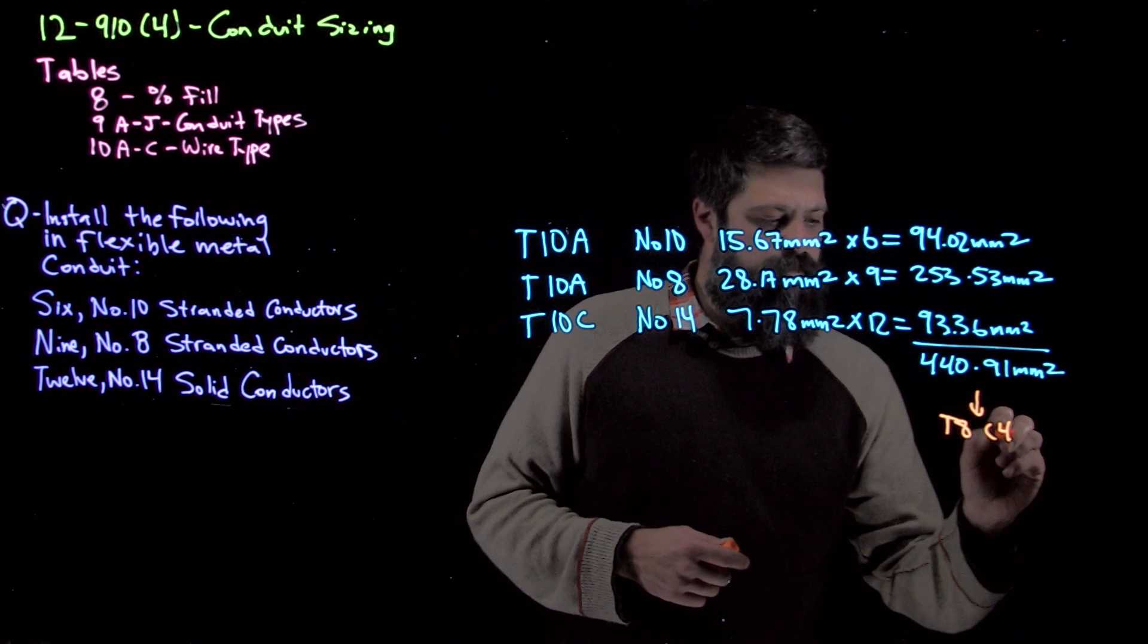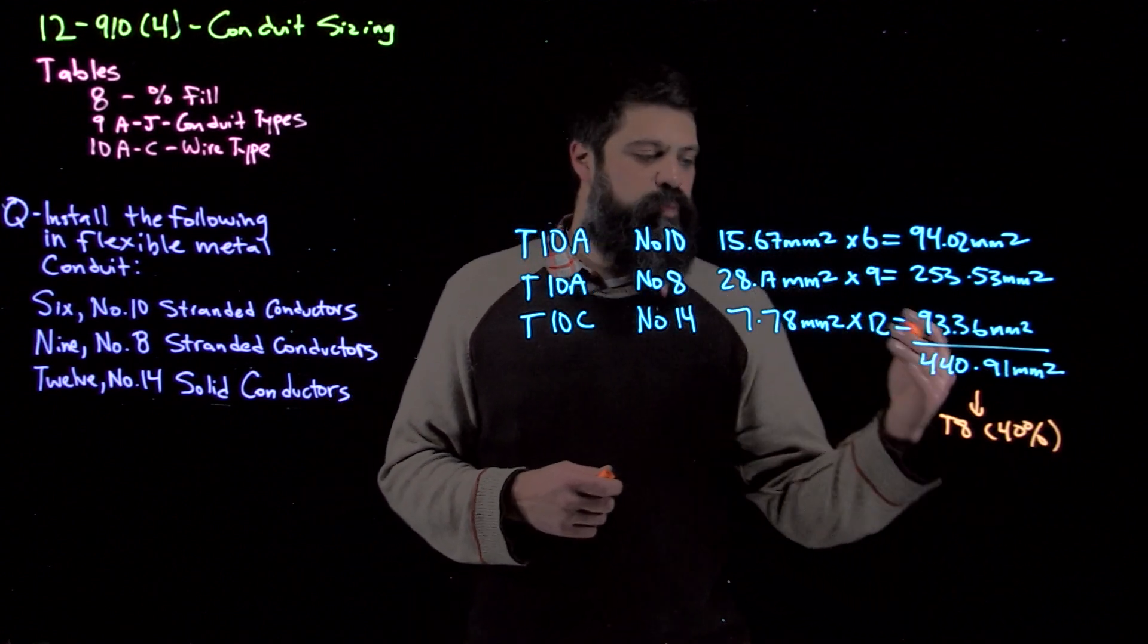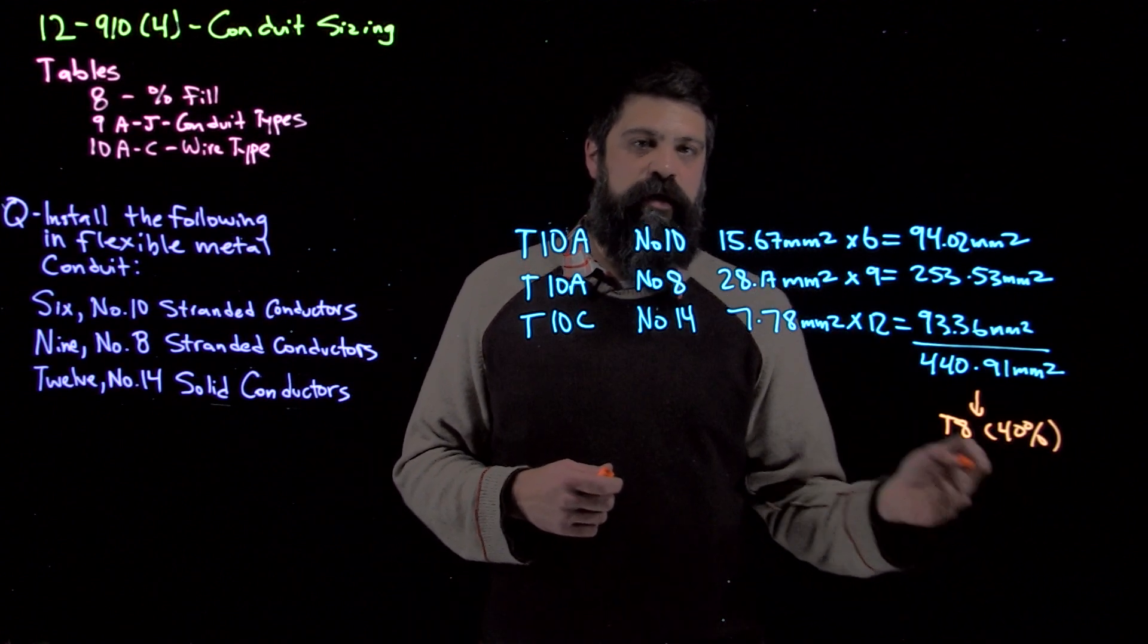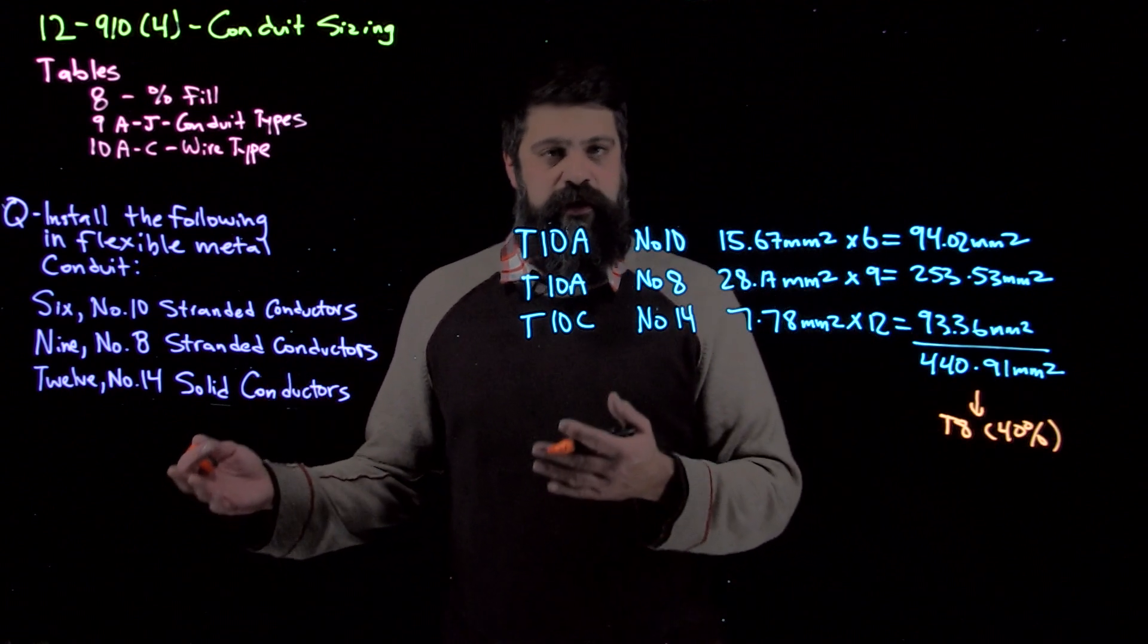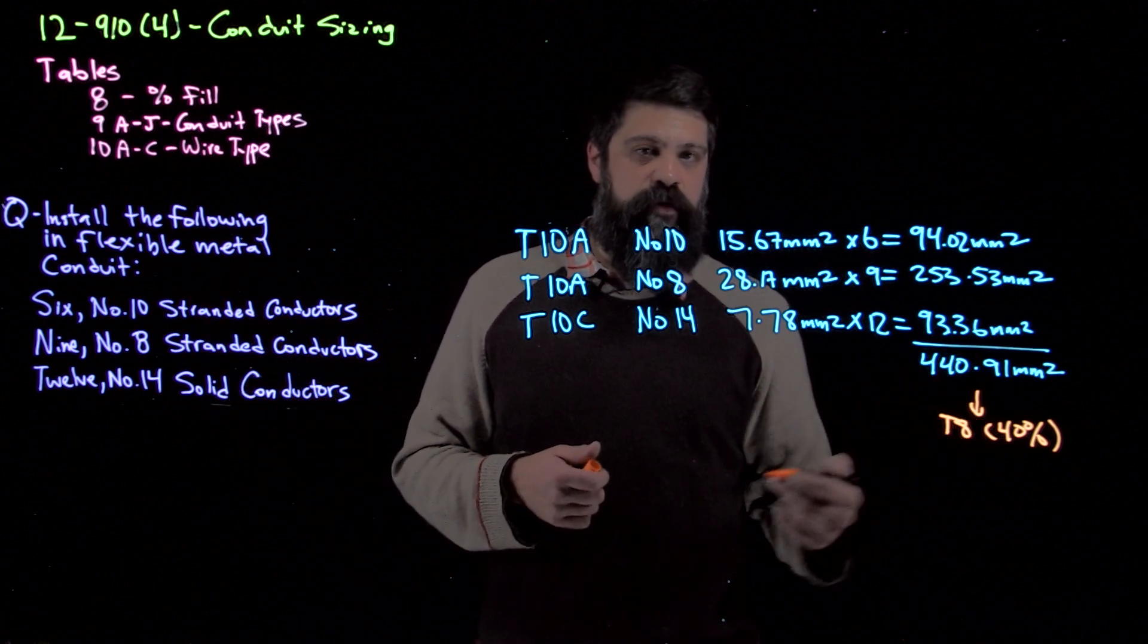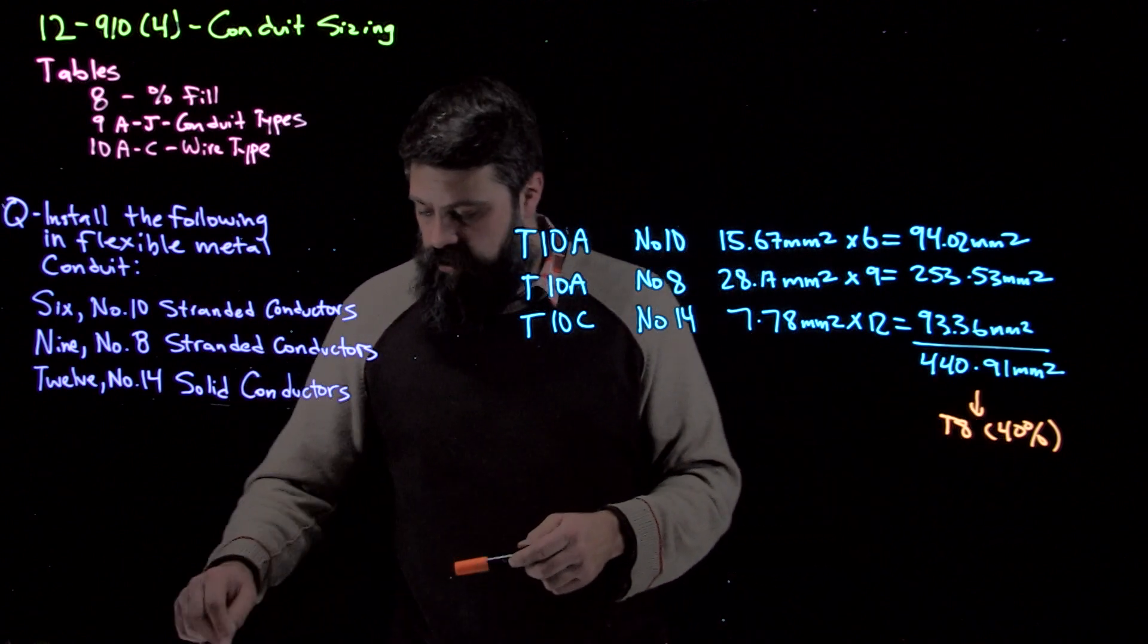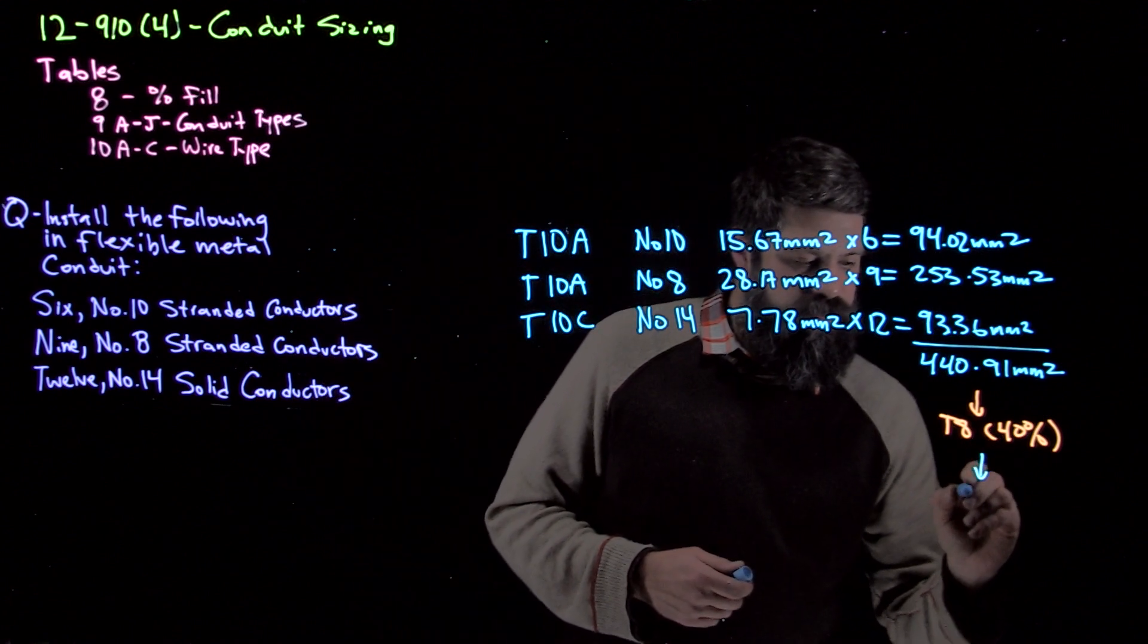Table 8 tells me 40%. The only reason we need that now is because when we go through tables 9A to J, we have all our columns that give me a percentage fill that I'm allowed. So once I find the conduit that I'm looking for from tables 9A through J, I'm going to be looking in the 40% column. For us, we're going to put this in flexible metal conduit. So that's going to take us to table 9B.